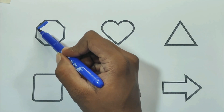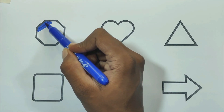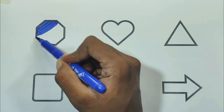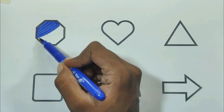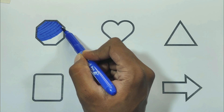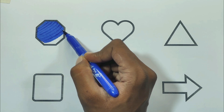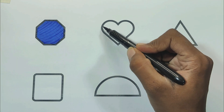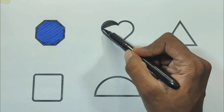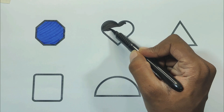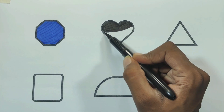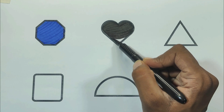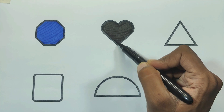Blue color, blue color octagon. The shape is blue color octagon. Black color, black color heart. The shape is black color heart.